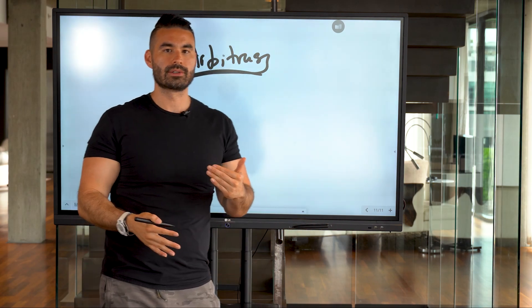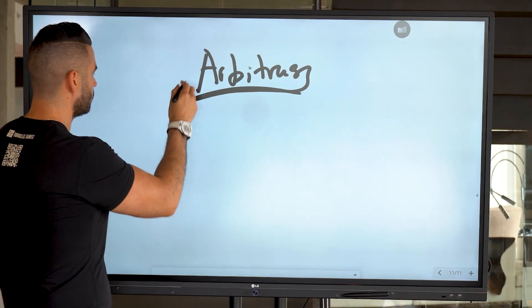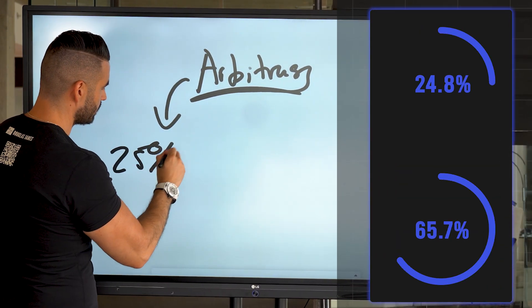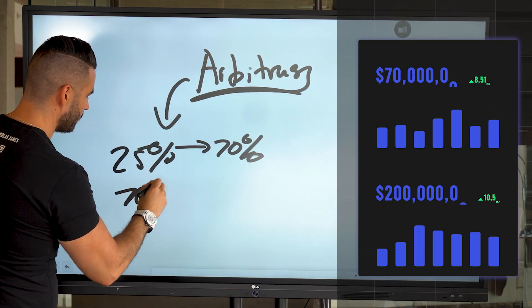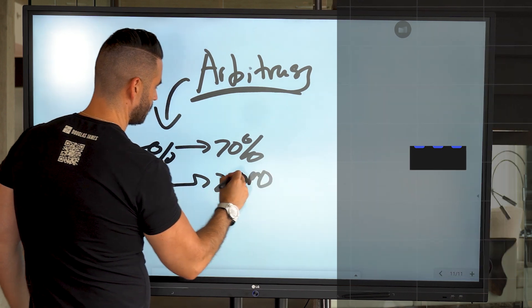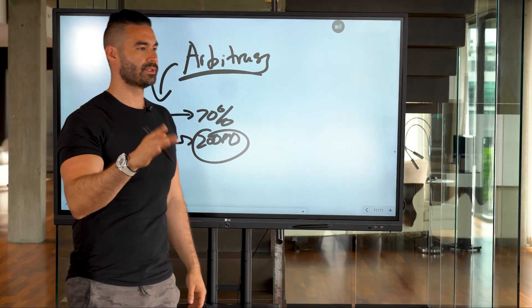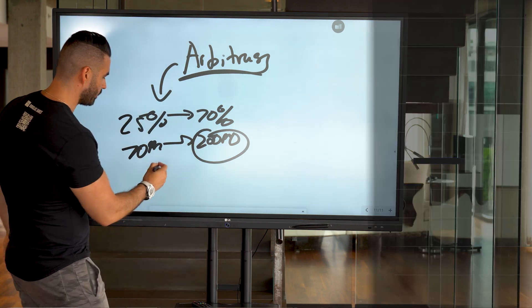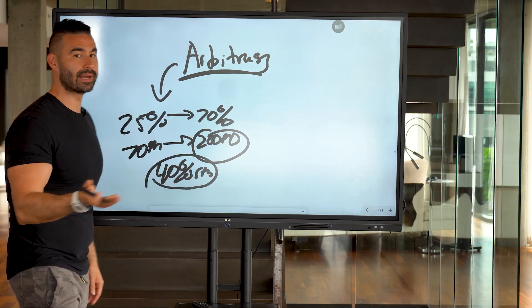So we've taken arbitrage in the search traffic space and essentially brought one company from 25% margin to 70% margin. And they're projected to go from 70 million a year to 200 million a year. And this is a company we're really excited about because we want to position them for a 10-figure exit. And they actually had to let go 40% of their staff.